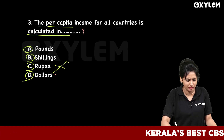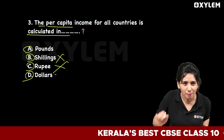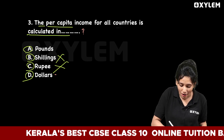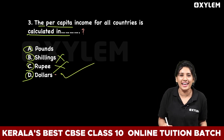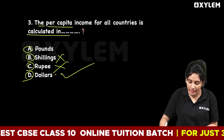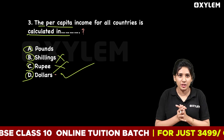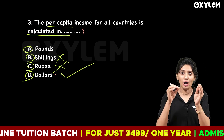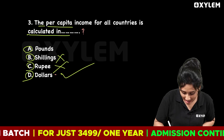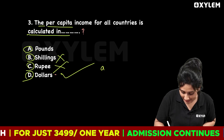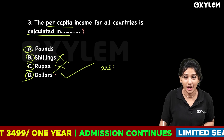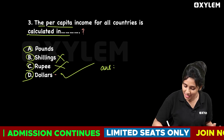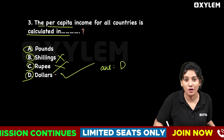Shilling is not the answer. Pounds is not the answer. Dollars — the per capita income is calculated in dollars. Option D, Dollars, is the correct answer.